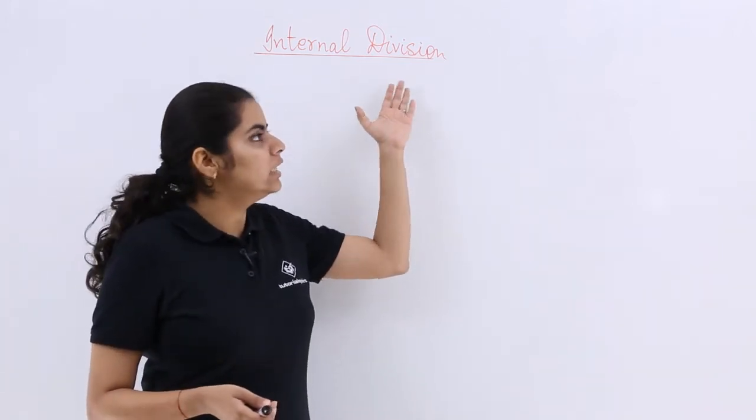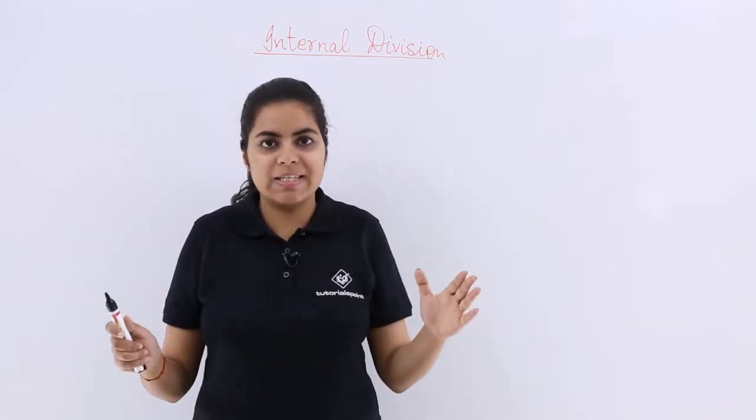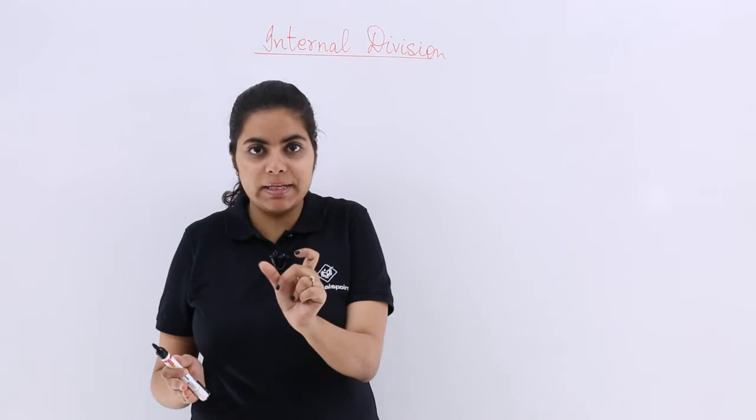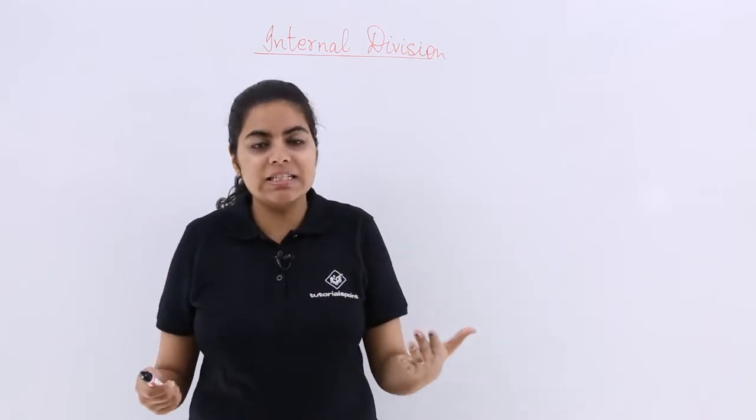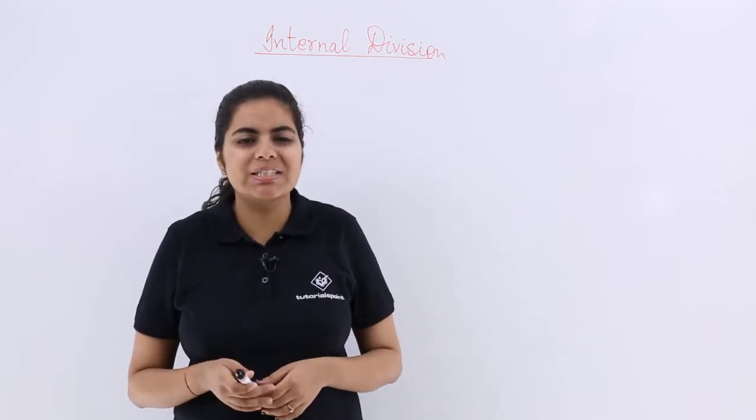Let's take up this case of internal division in the section formula. If you have a line segment and the line segment has to be divided by a given point, the point is situated internally on the line segment only and a certain ratio is given. How to go about it?